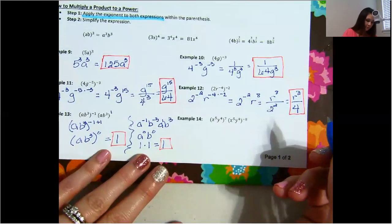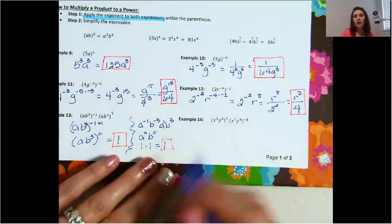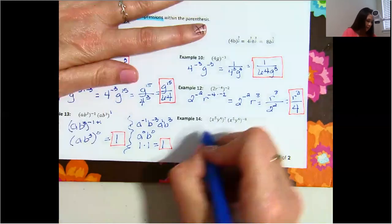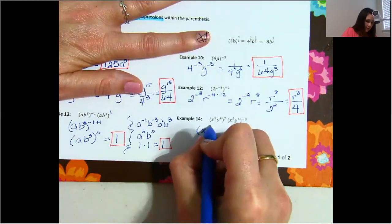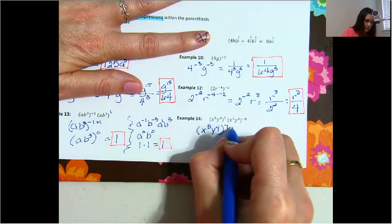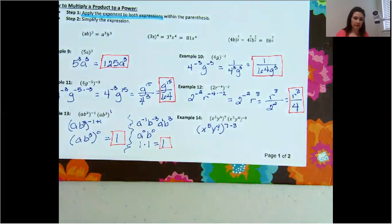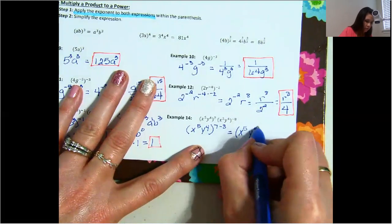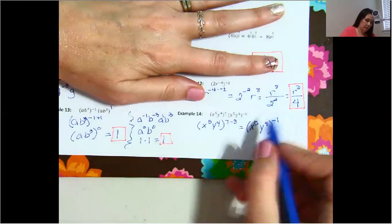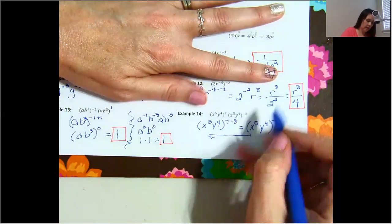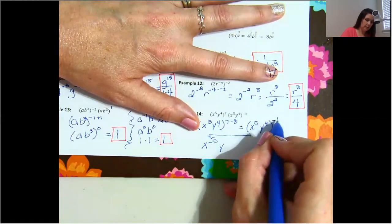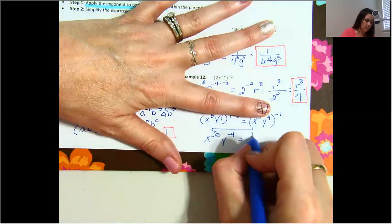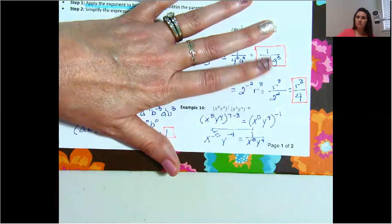Going on to example 14. We have the same base term: x to the fifth, y to the fourth, and then x to the fifth, y to the fourth. You could just write that out — it's a little bit less work. So you could do x to the fifth, y to the fourth, 7 minus 8, or plus negative 8. Really what you have is x to the fifth, y to the fourth, all raised to the power of negative 1. So: negative 1 times 5 gives x to the negative 5th, and negative 4 times negative 1 is negative 4. Both are negative, so move them to the denominator: 1 over x to the fifth, y to the fourth.